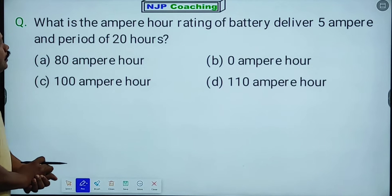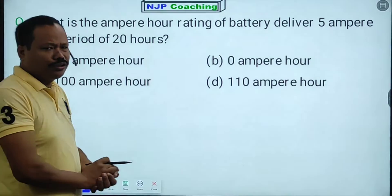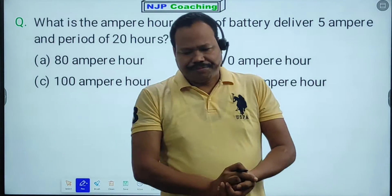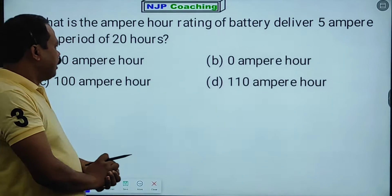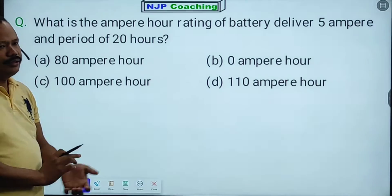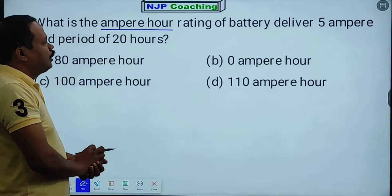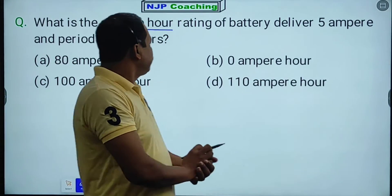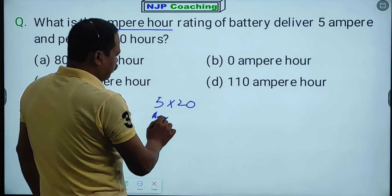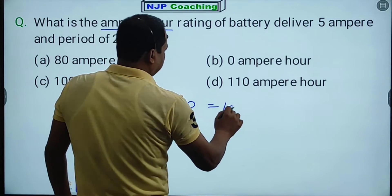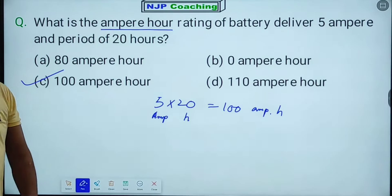Next question: what is the ampere hour rating of a battery that delivers 5 amperes over a period of 20 hours? That is 5 amperes multiplied by 20 hours, which equals 100 ampere hours. So the right answer is option C, 100 ampere hour.